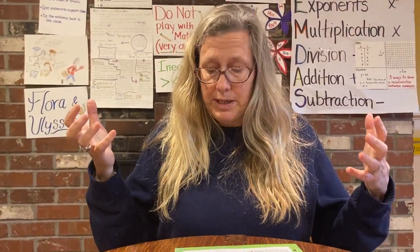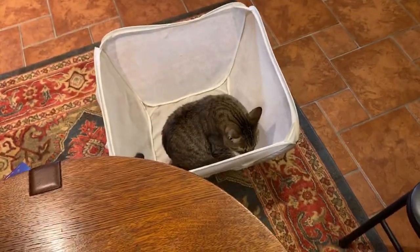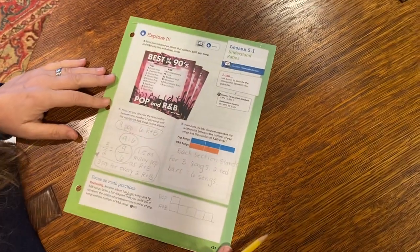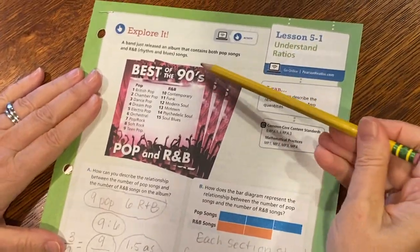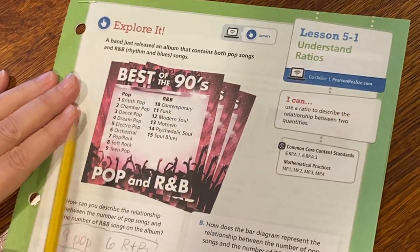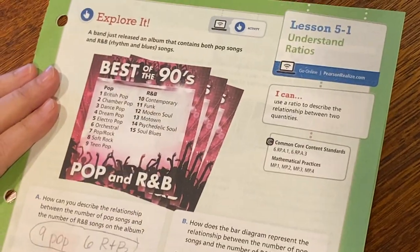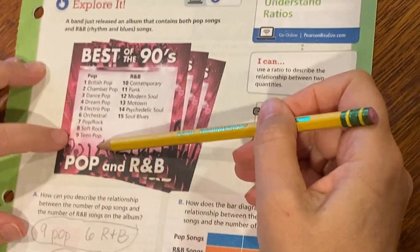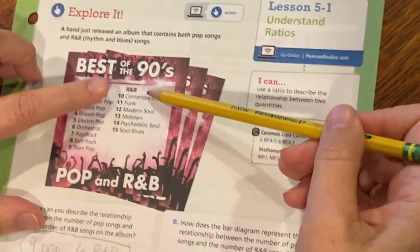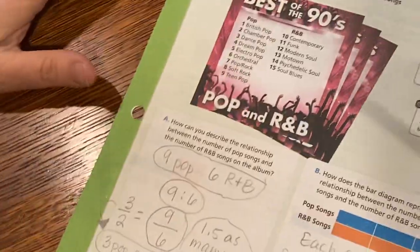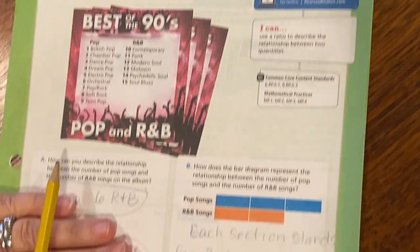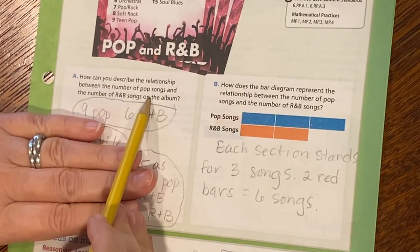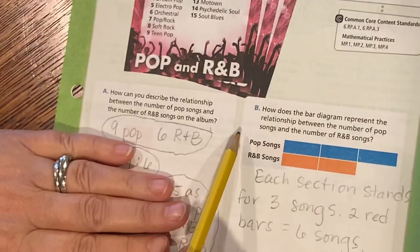Let's take a look at page 257. We have the Best of the 90s record with pop songs and R&B songs. If you look, there are nine pop songs and six R&B songs. The question asks: how can you describe the relationship between the number of pop songs and the number of R&B songs on the album?